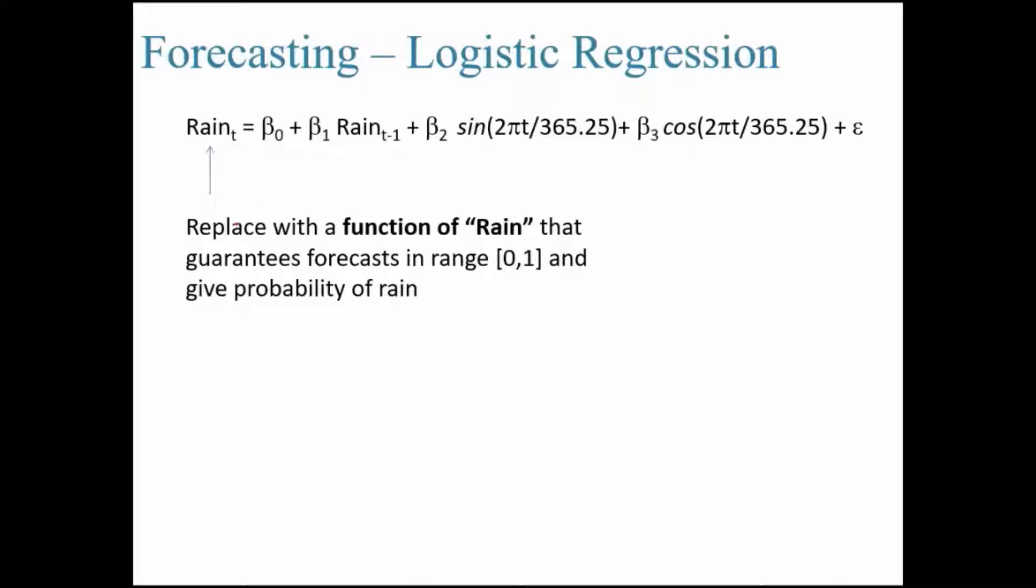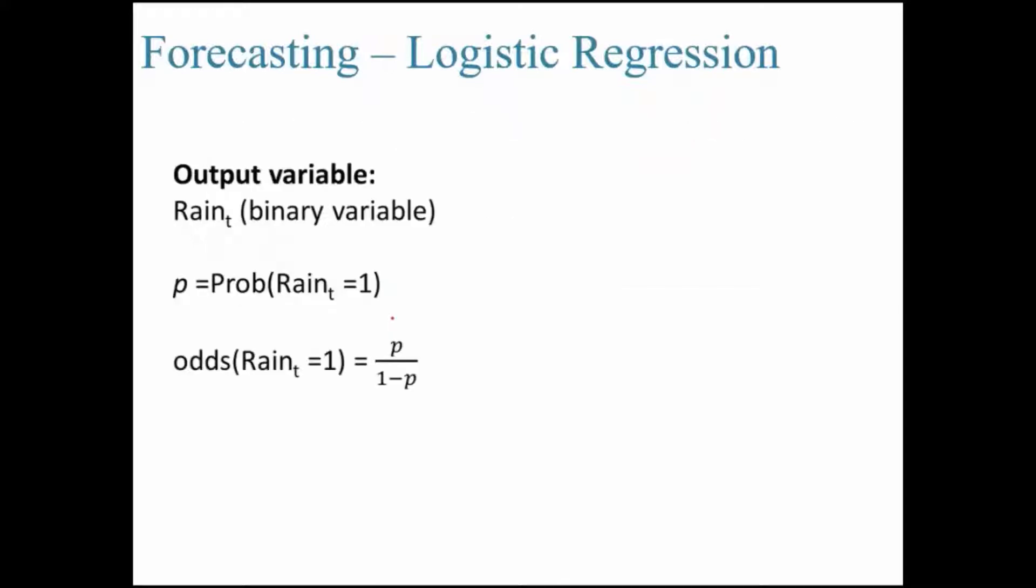However, if we replace this with rain, can we guarantee that it's going to fall within this range and will it give us the probability values? No, it will not. Hence, rather than taking the output variable as rain_t, we look at the odds.